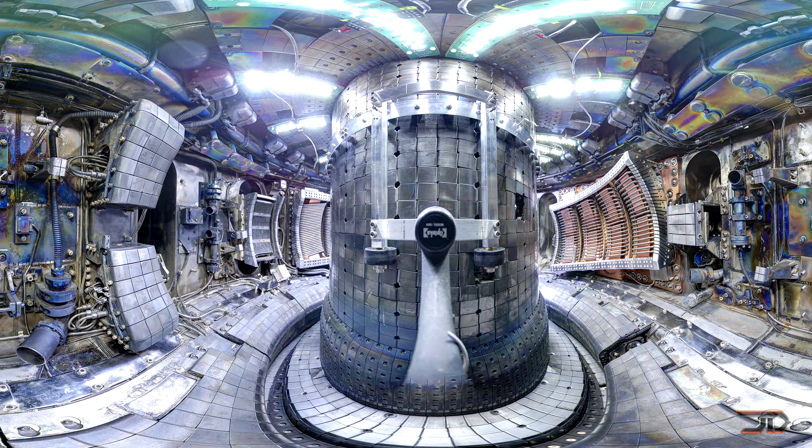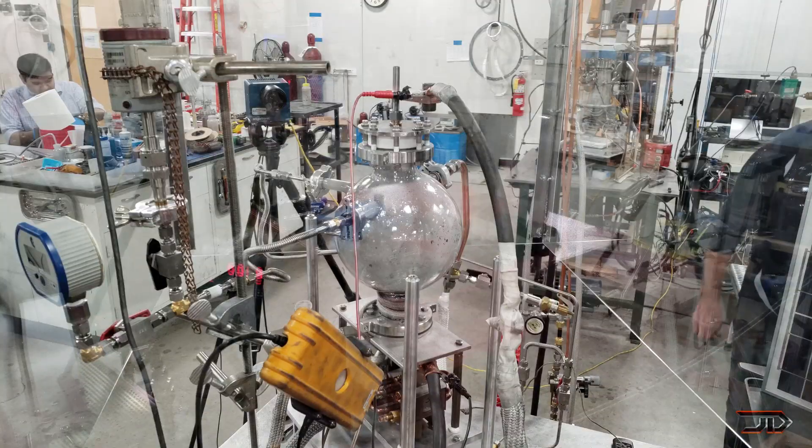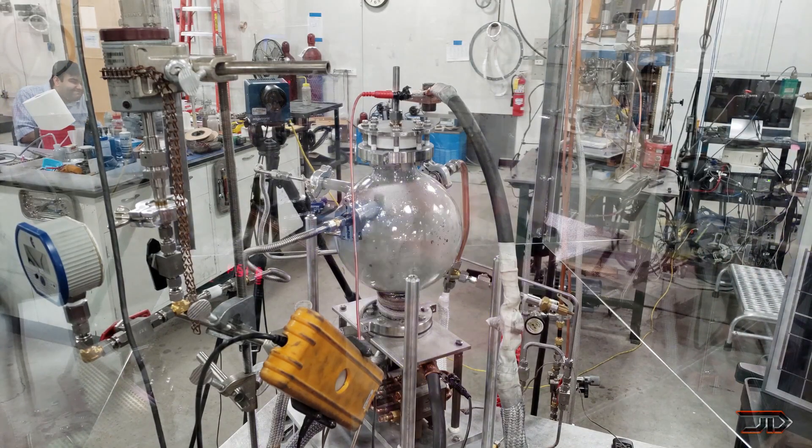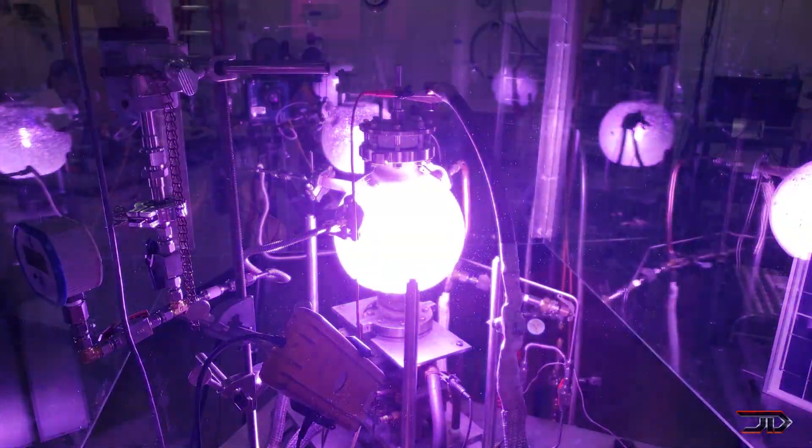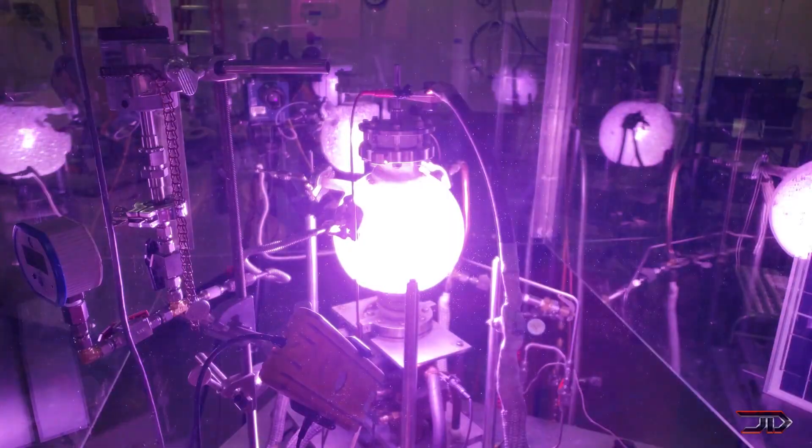One example of this is the Brilliant Light Power Sun Cell Reactor. To sum this up, it's basically a reaction which forces hydrogen atoms to go to a lower than ground state and exhibit enormous amounts of energy. Now yes, I know, this is technically impossible, but it's kind of neat to see working prototypes actually produce a reaction.